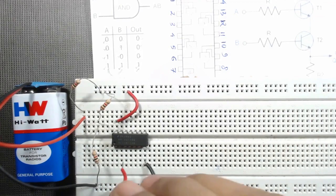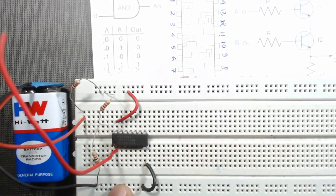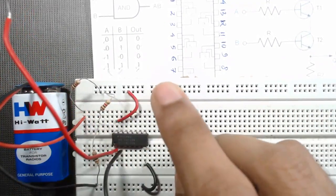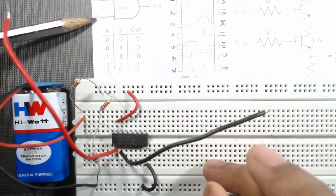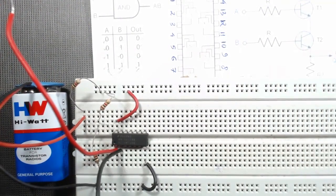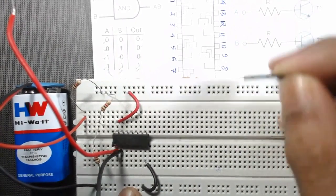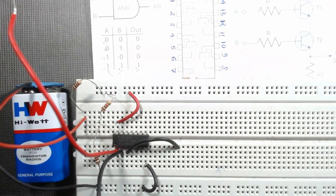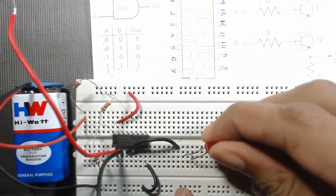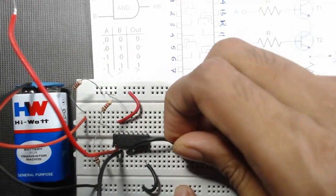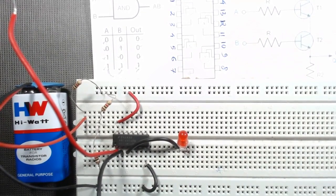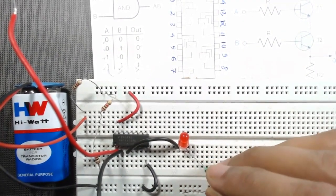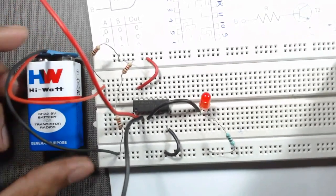Insert two wires at pin 1 and pin 2 so that pin 1 acts as terminal A and pin 2 acts as terminal B. We observe the output at pin 3. Connect a wire from pin 3 to the breadboard, then connect the longer (positive) terminal of a 5mm LED, and connect the other terminal through a 100-ohm resistor to ground to protect the LED. Our circuit is now ready.